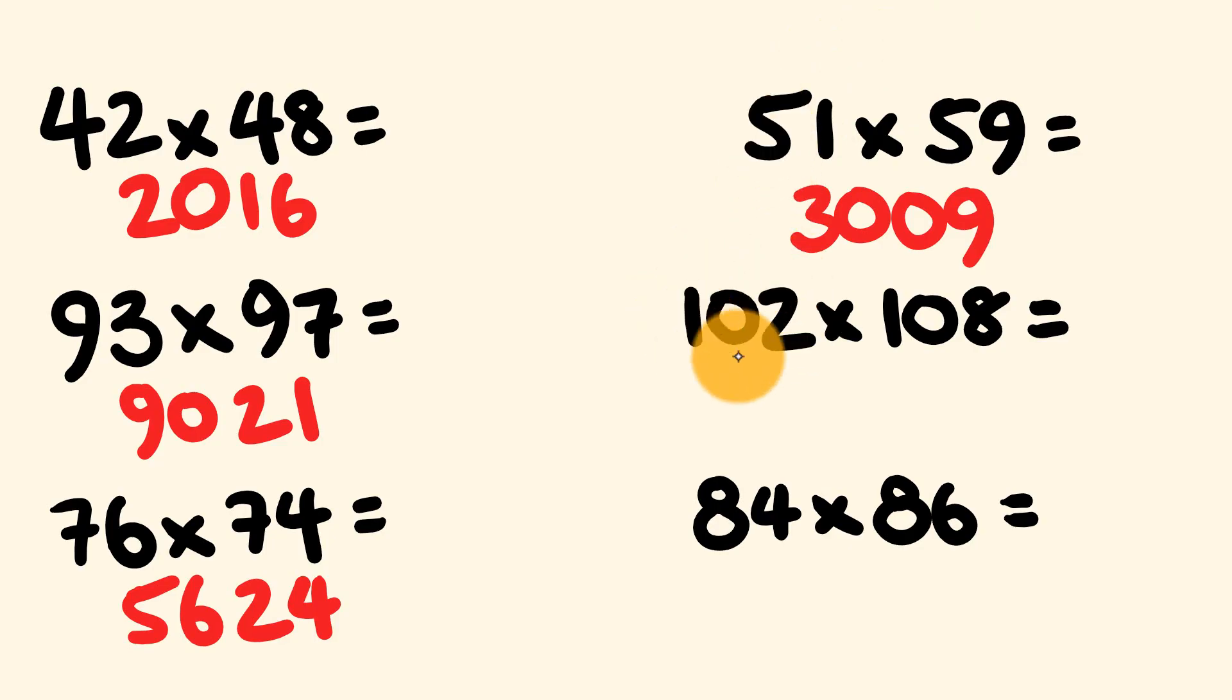A bit bigger now, 102 times 108. So we're going to use 10 as our tens digit there. So 10 times 11 is 110, and then 2 times 8 equals 16. Finally, we have 84 times 86. That's 8 times 9 is 72, and then 4 times 6 is 24. And there you have it.